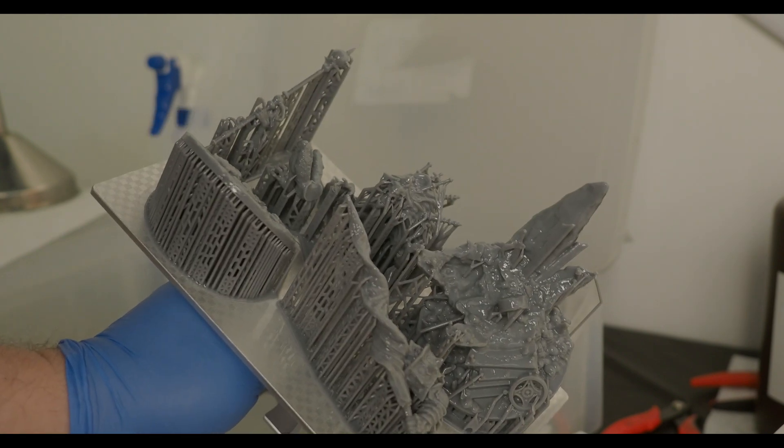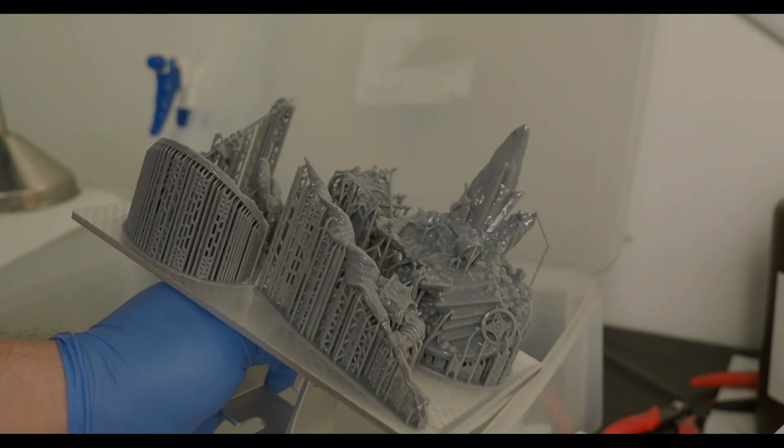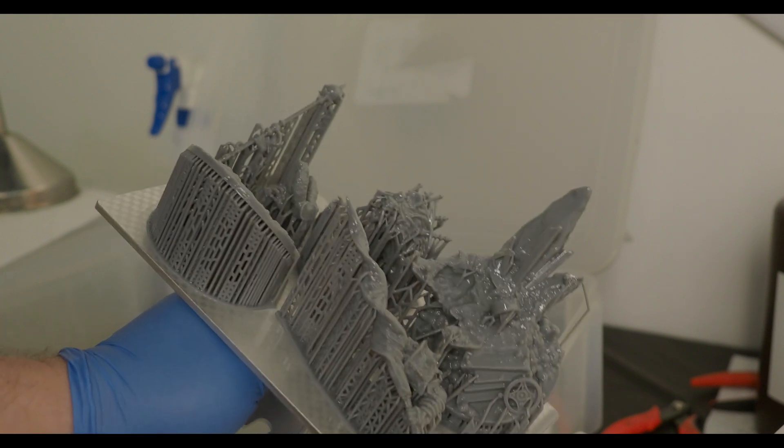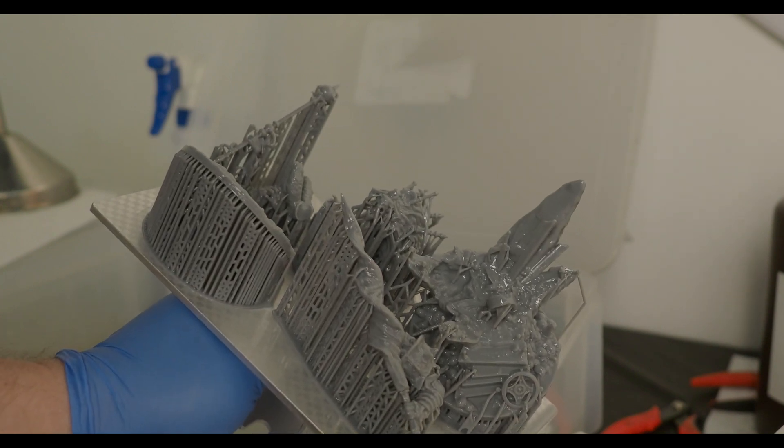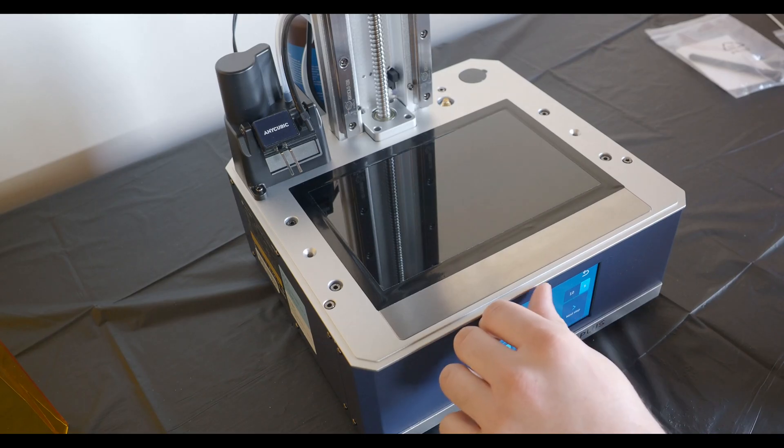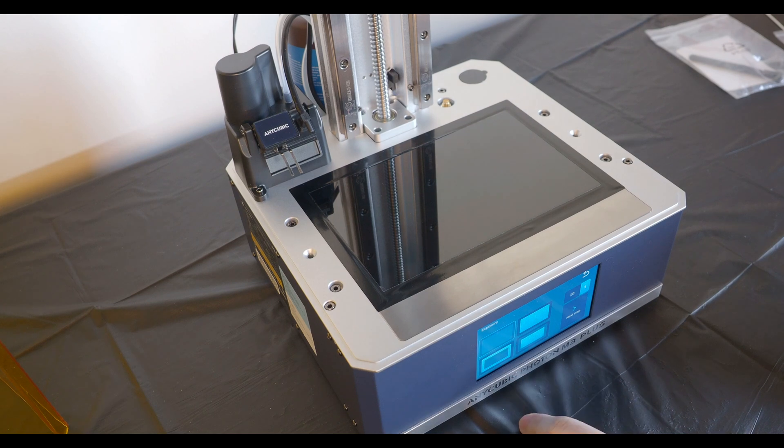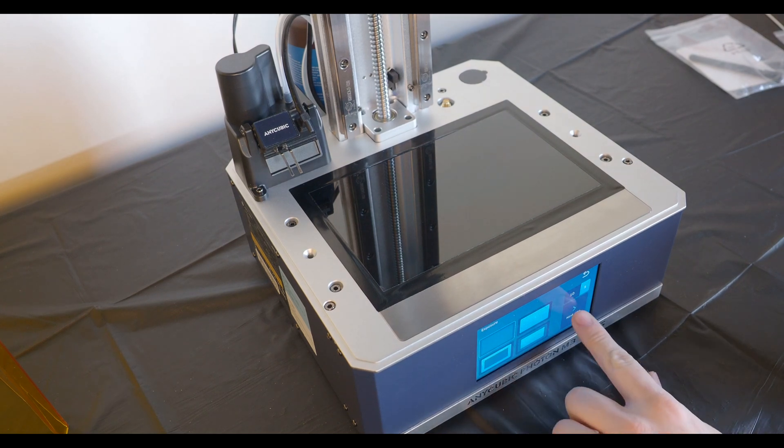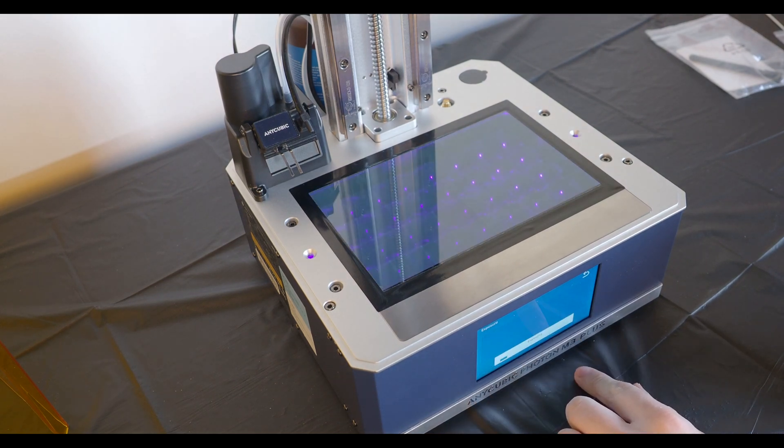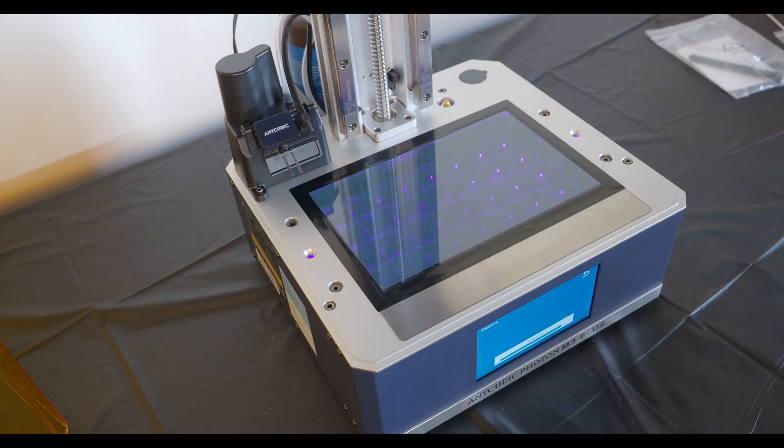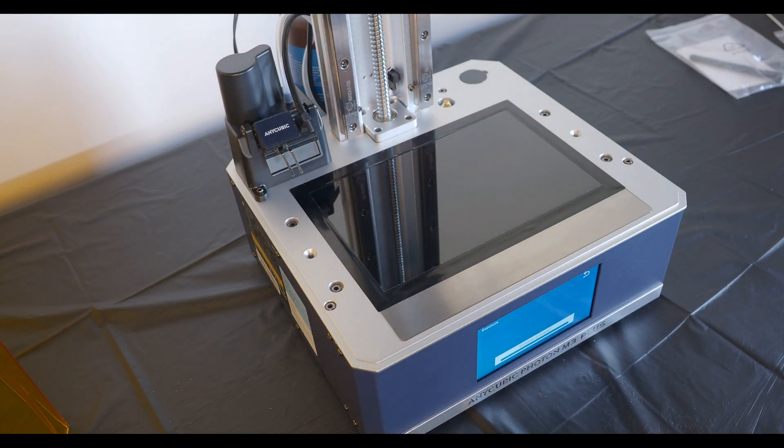Like the Anycubic Photon X 6K, it does have a 9.25-inch monochrome 6K screen and 34 microns of accuracy. But unlike the Photon X 6K, there is a different light source. Anycubic has released a new light source, the Li Turbo Light Matrix, which allows for light uniformity of over 92%, and overall just gives more light power so you have more precise printing results and overall better prints.